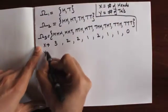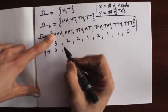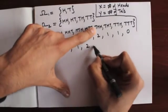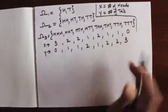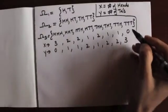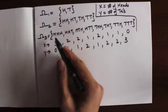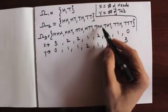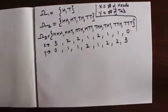Likewise, for Y counting tails: for HHH the value is zero, for HHT and HTH it's one, for HTT and THH it's two, and for TTT it's three. This is a random variable because the value clearly depends on the outcome of the three coin tosses. For instance, if the outcome is THH, X equals two and Y equals one.